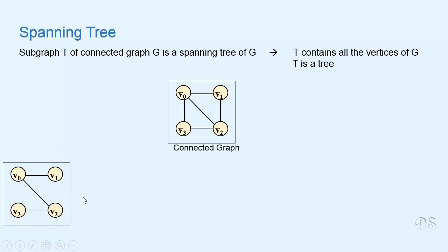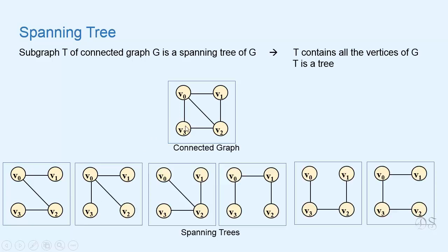Now a spanning tree of a graph is not unique — we can have more than one spanning tree. For example, for this graph, these all are spanning trees. These are called spanning trees because they span over all the vertices of the graph.